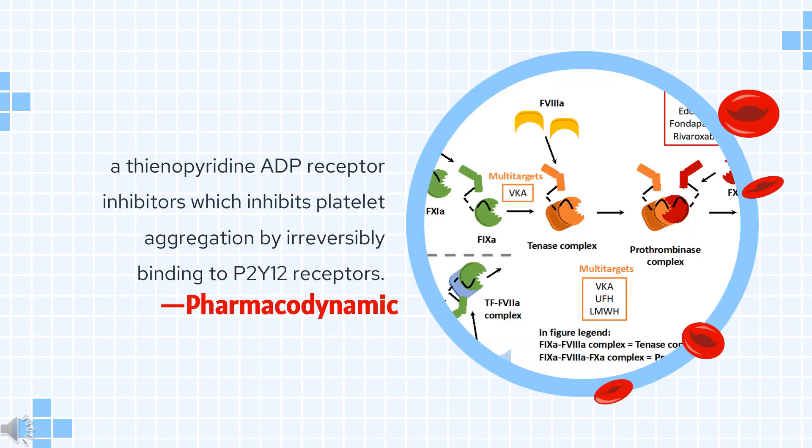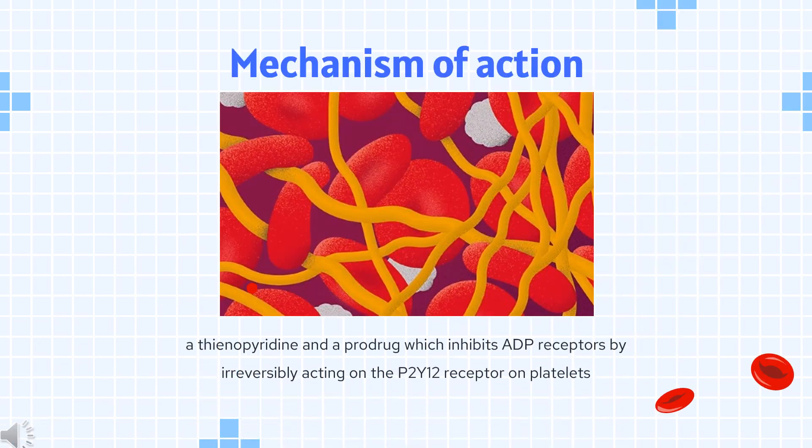Pharmacodynamics and Mechanism of Action: Prasugrel is a thienopyridine ADP receptor inhibitor which inhibits platelet aggregation by irreversibly binding to P2Y12 receptors. It is a prodrug; its active metabolite prevents binding of adenosine diphosphate (ADP) to its platelet receptor, impairing the ADP-mediated activation of the glycoprotein GPIIb-IIIa complex. Prasugrel is proposed to have a similar mechanism of action to clopidogrel.